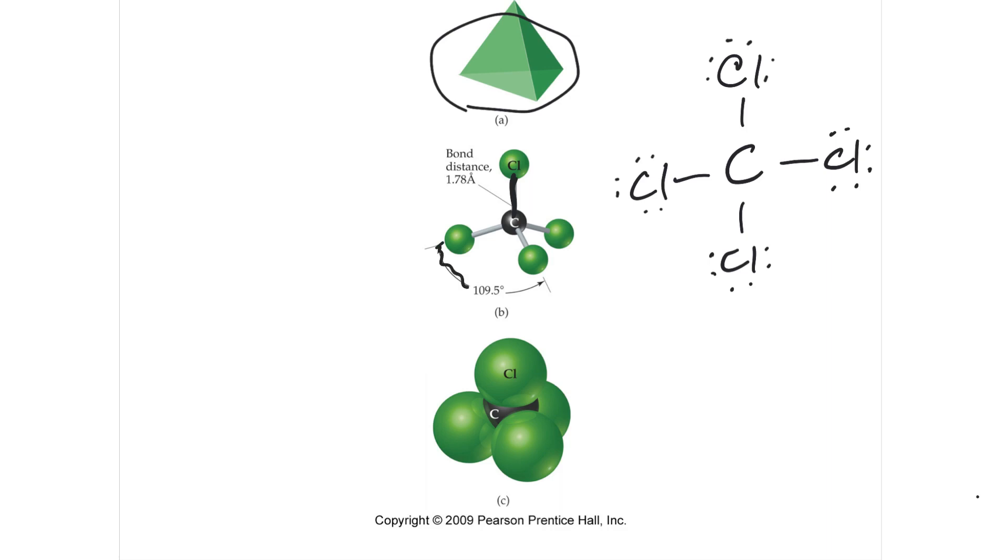And then the angle itself between a chlorine to a carbon to a chlorine, that angle is found to be 109.5. So if you take four chlorines and say it's 90 degrees, well, that would make sense.